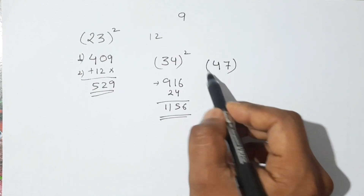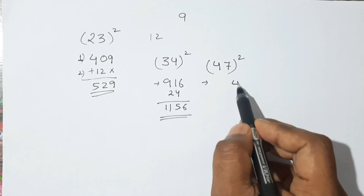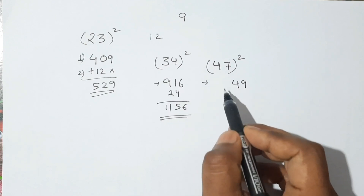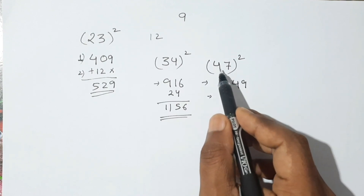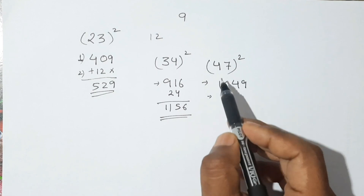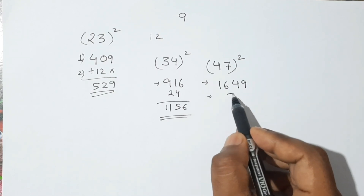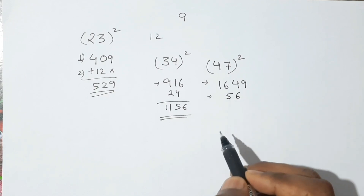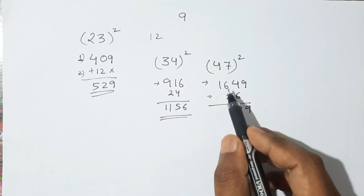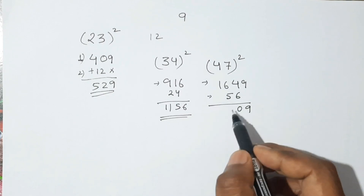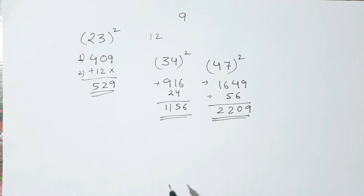Let's take 47 square. First step: 7 square is 49, 4 square is 16. Second step: multiply all three digits — 4 sevens are 28, 28 into 2 is 56. We add 56 here. So adding: 9, then 10 — carry 1 — 6 plus 5 is 11 — carry 1 — 12, and 1, 2. This is the square of 47, which is 2209.